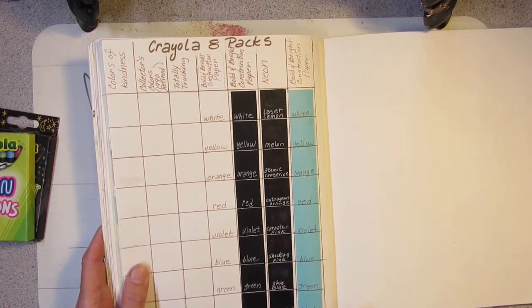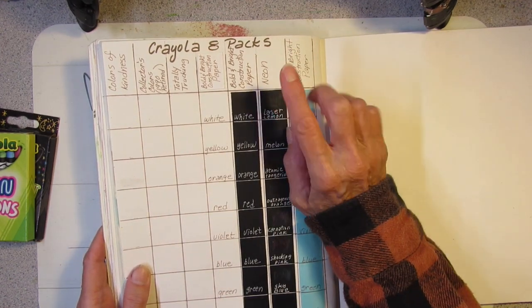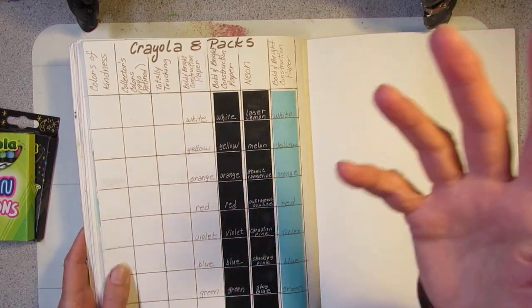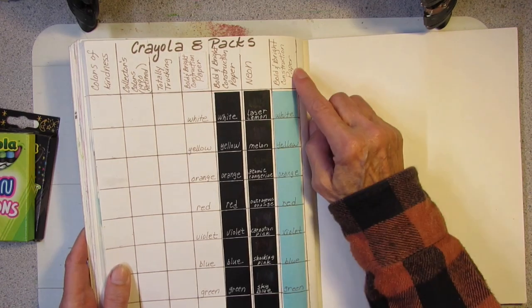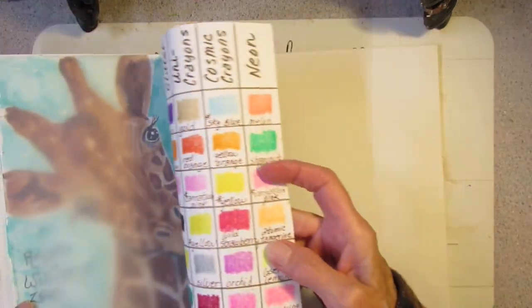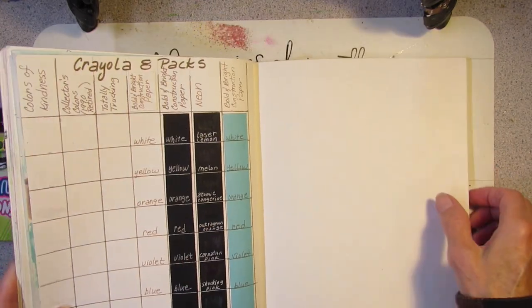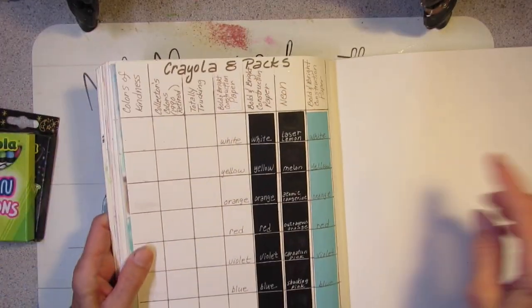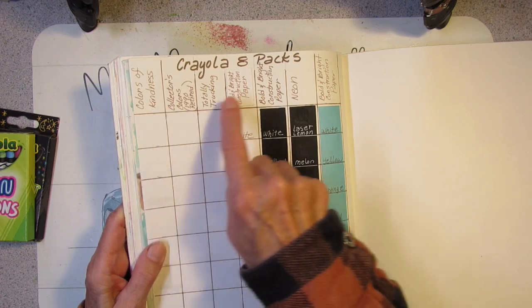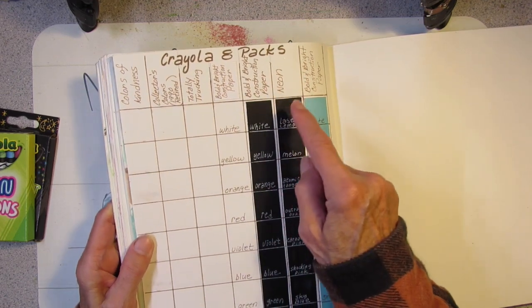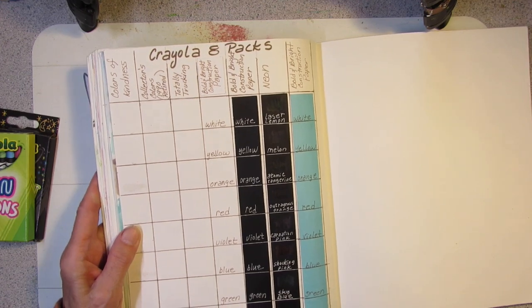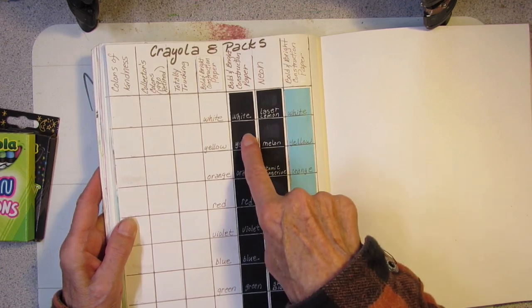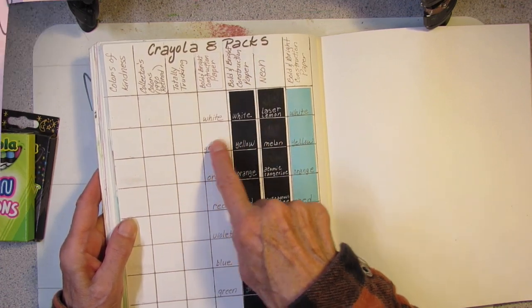And then I decided to put in the black strip for the neon crayons. And then I was like, how would they look on a mid-tone? So I put in a blue strip for the Bold and Bright. I'm not worried about the neons because they're already over here. And then I'm like, well, maybe I should go ahead and do them on white because I have the neons on the white. So I moved the Colors of Kindness over to there and put in the Bold and Bright construction paper crayons on white. So I'm going to do white, black, and blue. So I have dark and a mid-tone and a white.